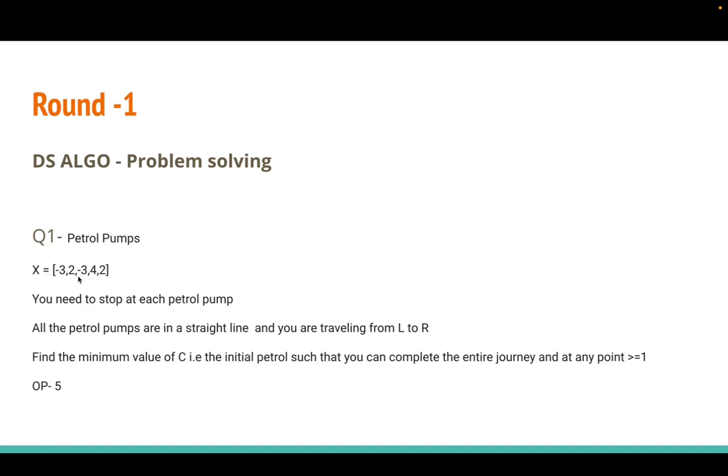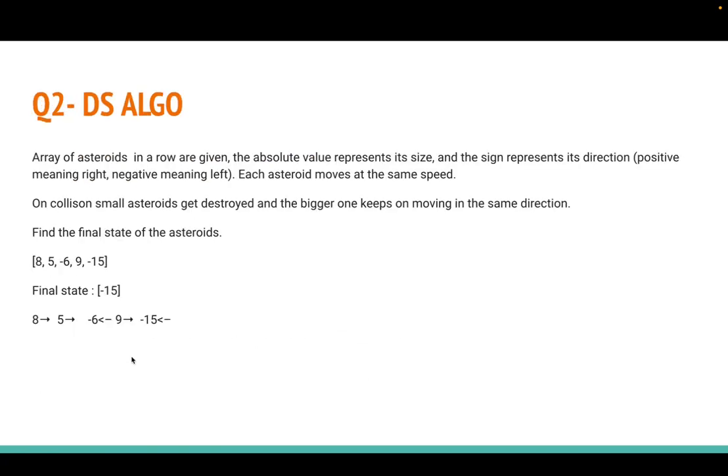In this case, if you start with four liters, you go to minus three, remain with one, then plus two becomes three, then minus three becomes zero - so you cannot start with four. If you start with five: five minus three is two, then becomes four, then four minus three is one. So you can start with five - the output is five.